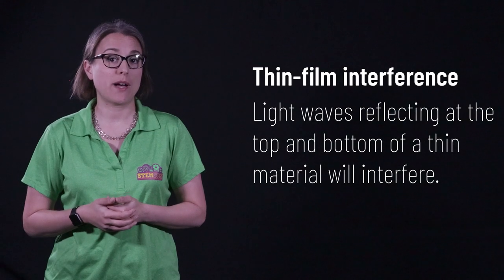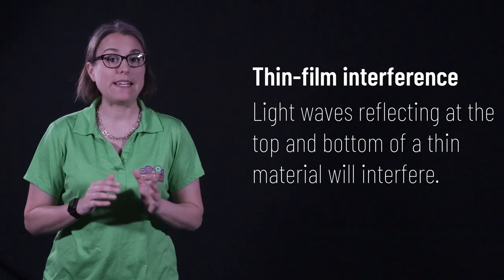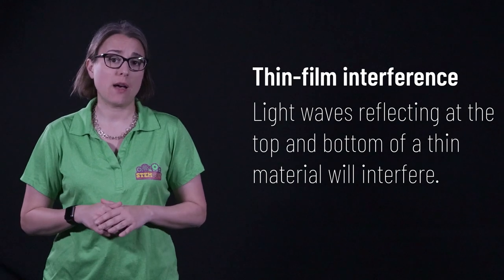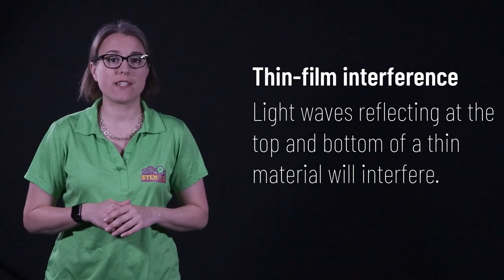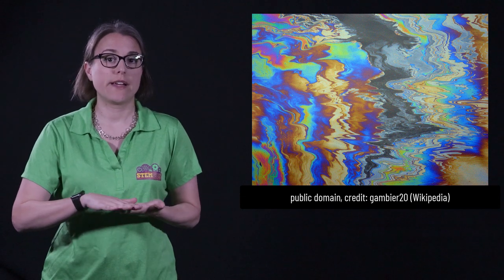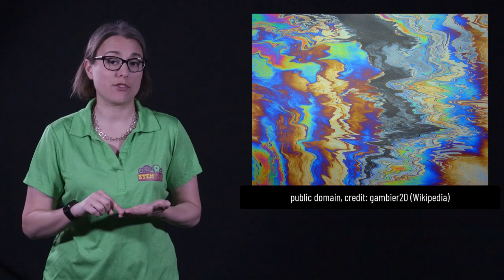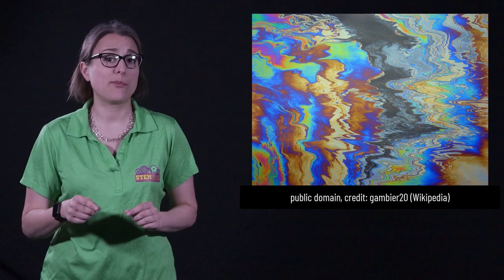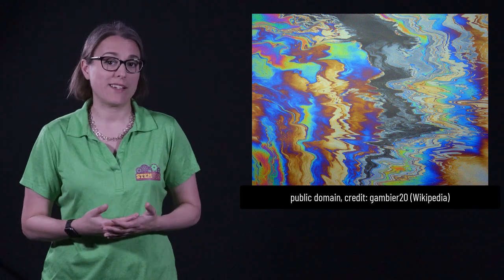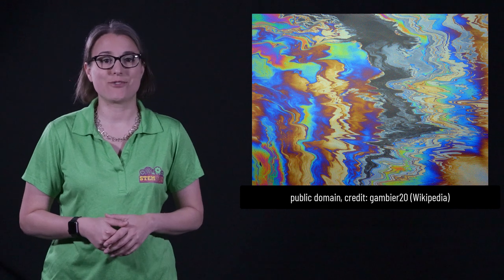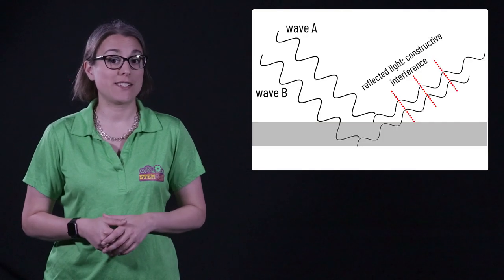When light waves reflect at the top and bottom interfaces of a thin layer of material, an interference pattern will be created. This phenomenon is known as thin film interference. If you've seen a rainbow in an oily water puddle, you've seen thin film interference. In a thin puddle of oily water, a thin layer of oil will sit on top of the water. At just the right level of thickness, a single wavelength of light will experience constructive interference, leading to only a single color of light appearing on reflection. As the thickness of the oil changes at the end of the puddle, the changing thickness results in a rainbow.